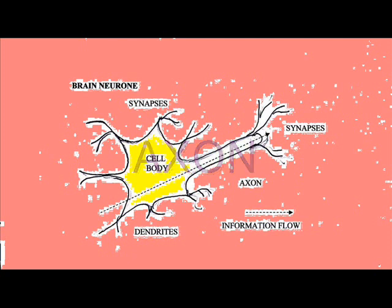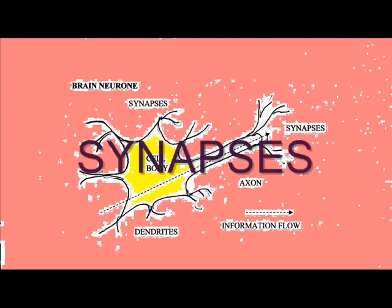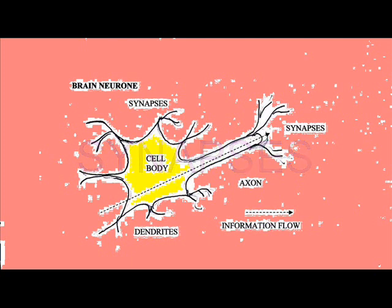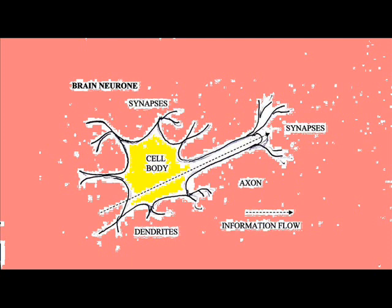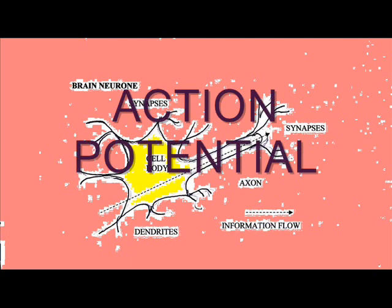The dendrites at each end are connected to synapses, and at the synapses neurotransmitters are received or released. An electrical signal passes along the membrane of the neuron.